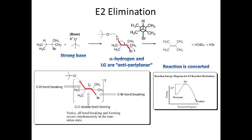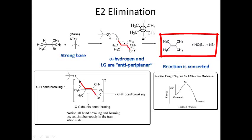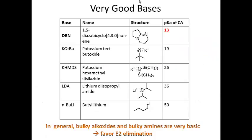Looking at the products: we get an alkene, tert-butanol formed when the tert-butoxide anion deprotonates the alpha hydrogen, and KBr formed when the counter ion and bromine form an ionic bond.